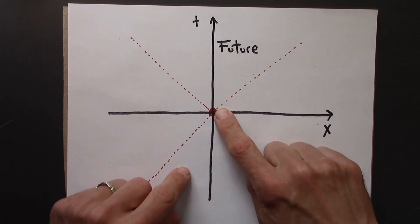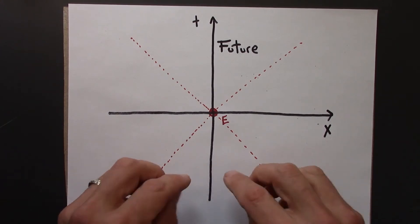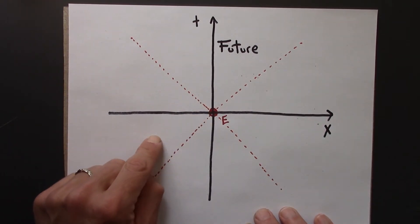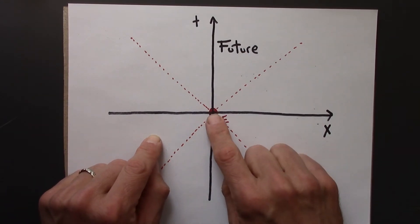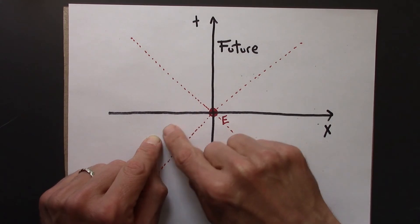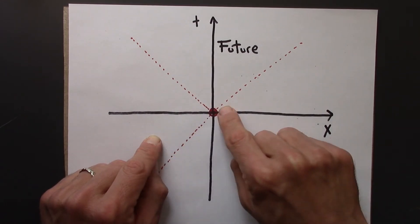So in this region, we could have events down here influencing event e. Like, the point over here couldn't influence e, couldn't be causally connected, because there's not enough time for a signal. Even traveling at the speed of light, a signal couldn't make it to e.